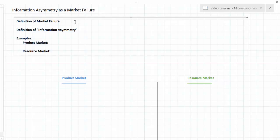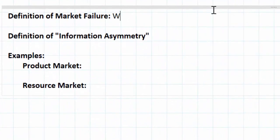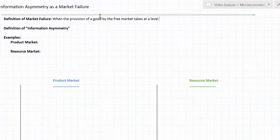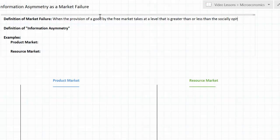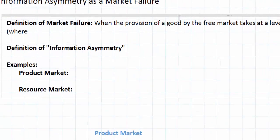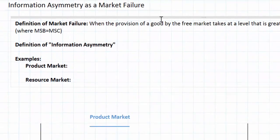Let's revisit our definition of market failure here. A market failure exists when the provision of a good by the free market takes place at a level that is greater than or less than the socially optimal level. We have learned in previous lessons that the socially optimal level of output in a particular market occurs where the marginal social benefit, in other words the benefits to all members of society, are equal to the marginal social cost or the costs to all members of society.